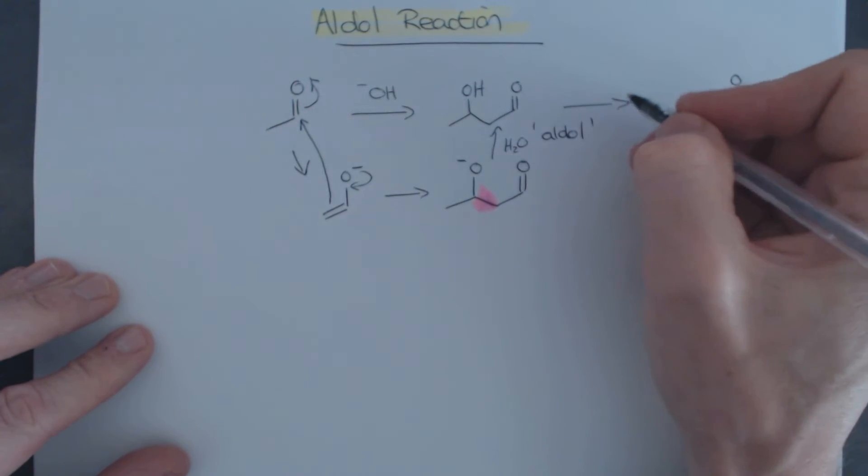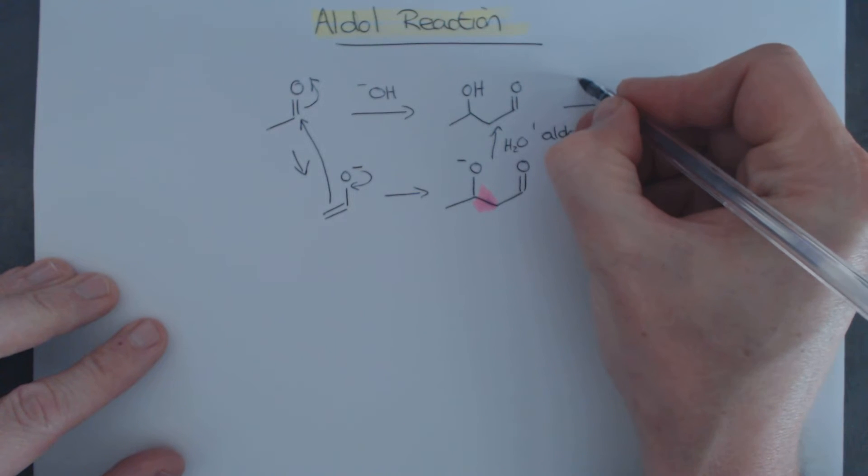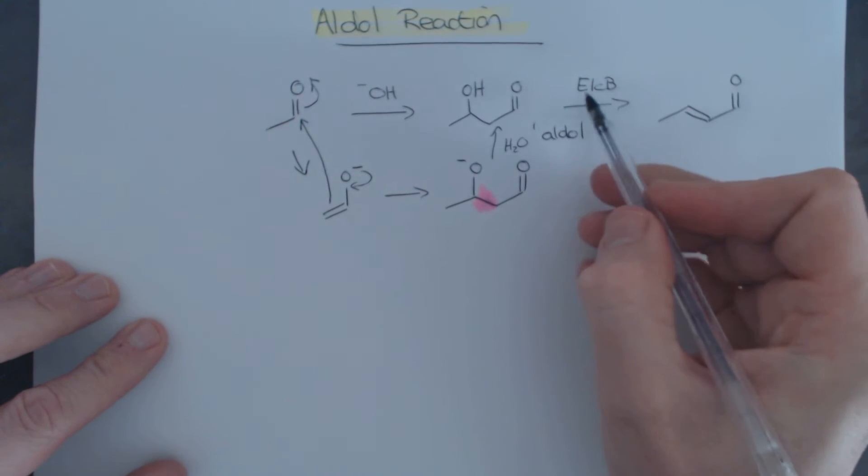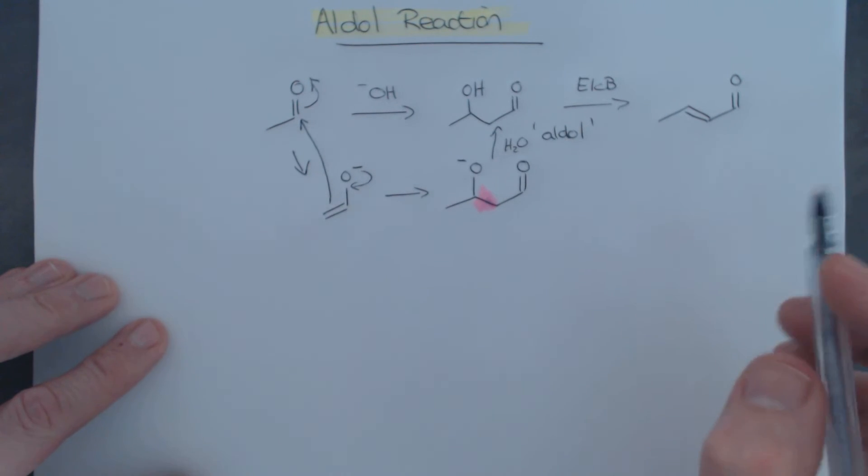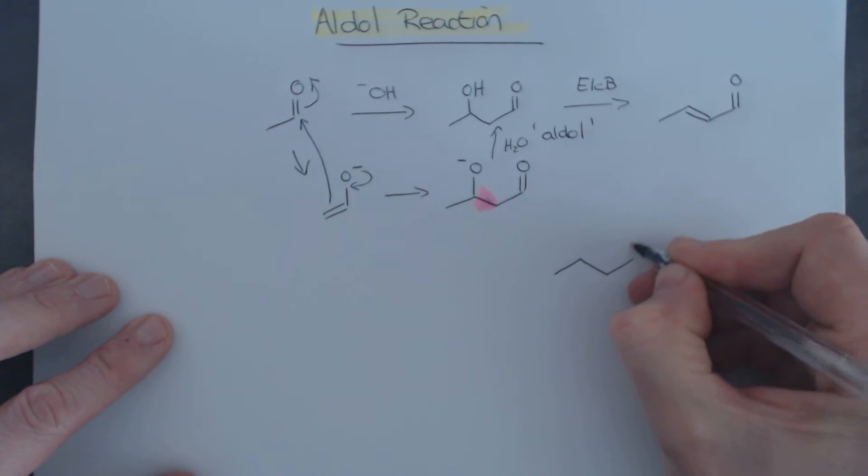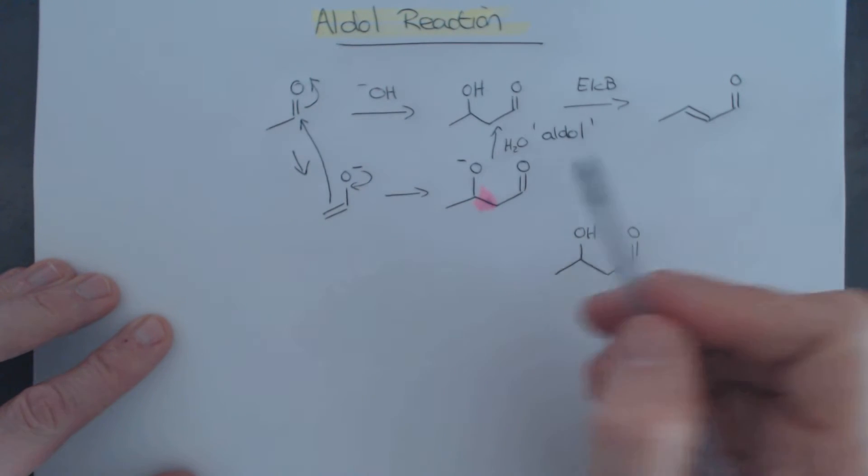And the elimination mechanism under basic conditions is known as E1CB, which stands for elimination unimolecular conjugate base. So I just want to show you, because this is a really important, different mechanistic step. You might be tempted to think that the mechanism of this, because you can see going from there to there, we've eliminated water.